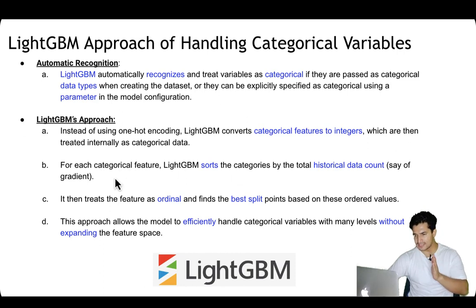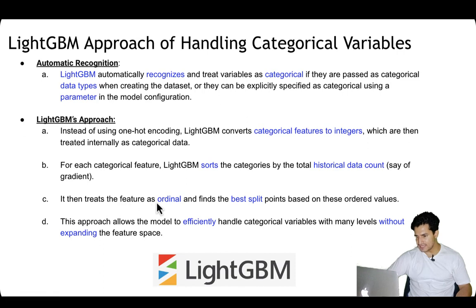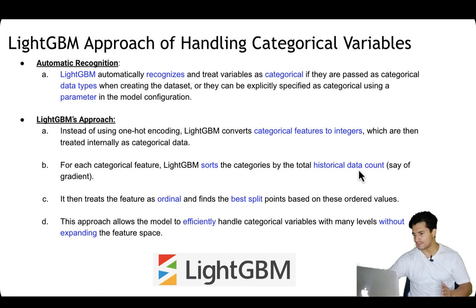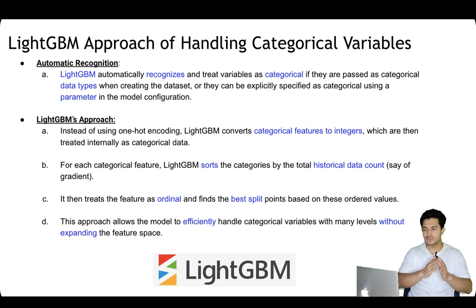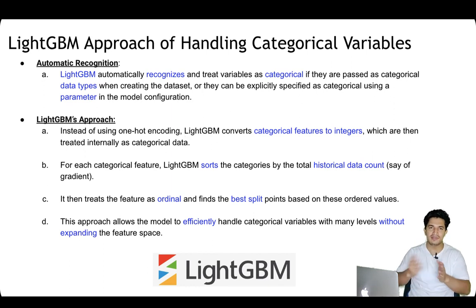The idea in LightGBM is that it converts a categorical variable's many categories into numbers that are sorted by the count of data points within each category — not random assignment. Because tree-based models work by finding the best split, LightGBM will prioritize labels with more data points since those have already been assigned lower integer values by the sorted ordering. It then finds the best split giving more priority to numbers with high data-point counts. This allows the model to efficiently handle categorical data with many levels without expanding the feature space.